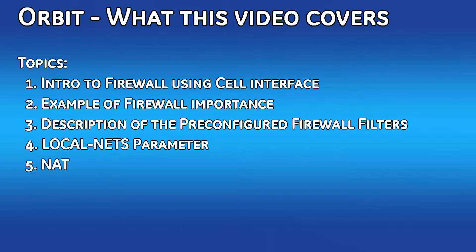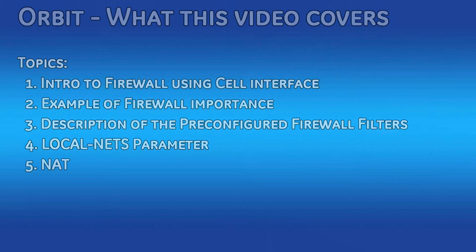Then I will show each pre-configured firewall filter and explain its function. After that, I'll show which filters are used by default in the cellular interface and how you can modify them to add additional rules. I'll also cover what the local NATs parameter means and how you should configure it for your system. At the end, I'll briefly touch on NAT and its importance in the cellular interface.